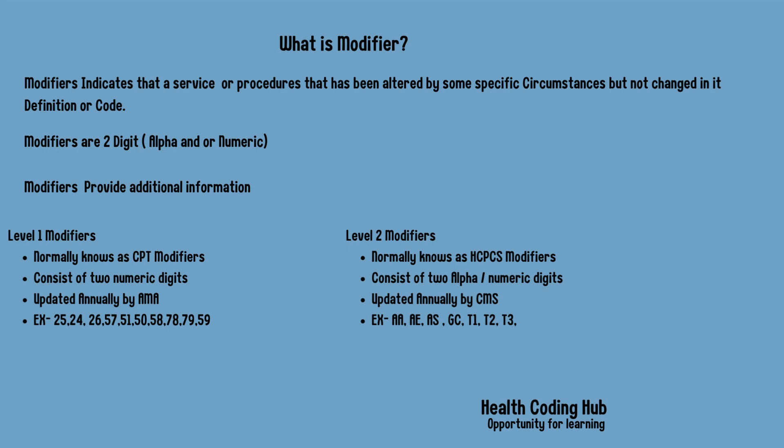In medical coding we can find two different levels of modifiers: Level 1 modifiers and Level 2 modifiers. Level 1 modifiers are normally known as CPT modifiers. They consist of numerical digits and are updated annually by the AMA — the American Medical Association. Examples of Level 1 modifiers include modifier 25, modifier 24, and modifier 26.